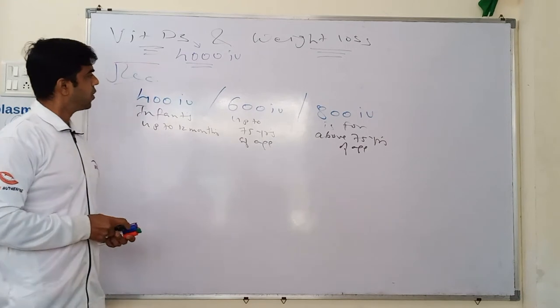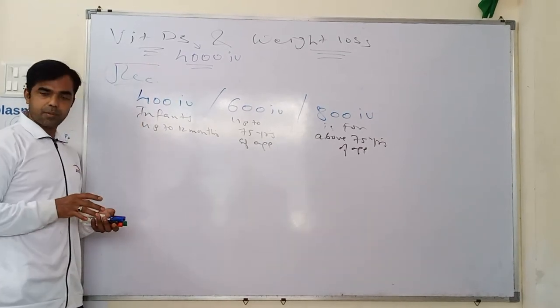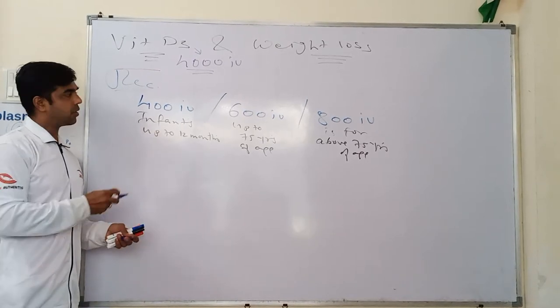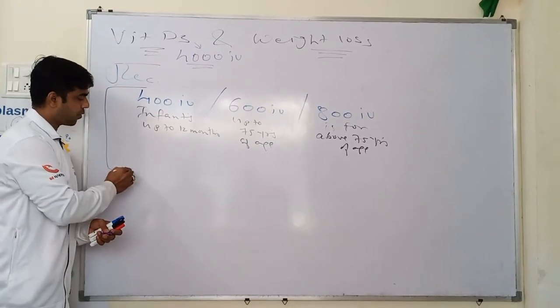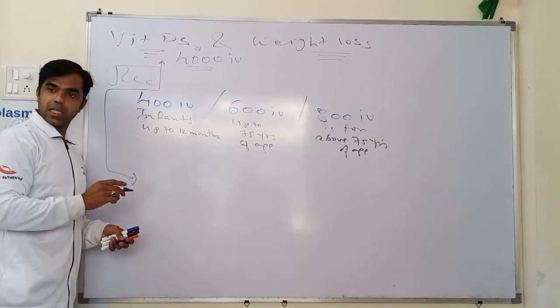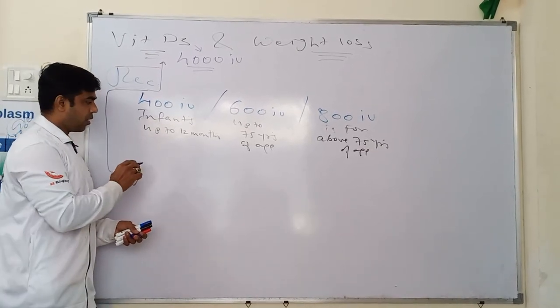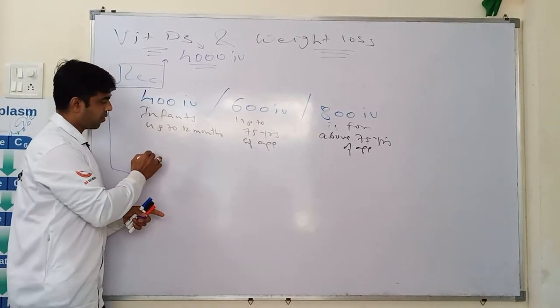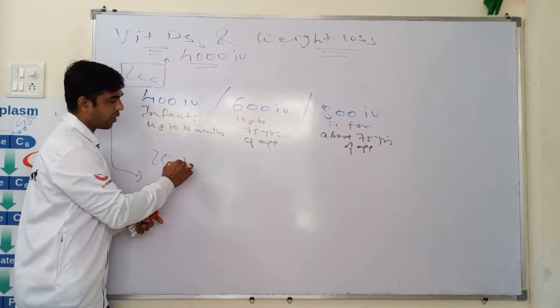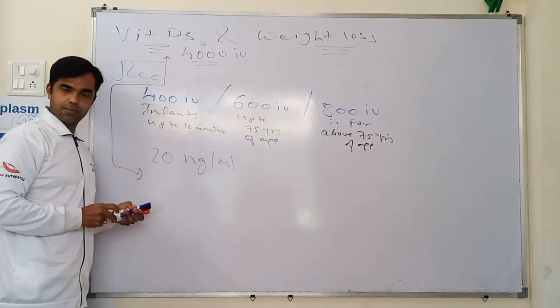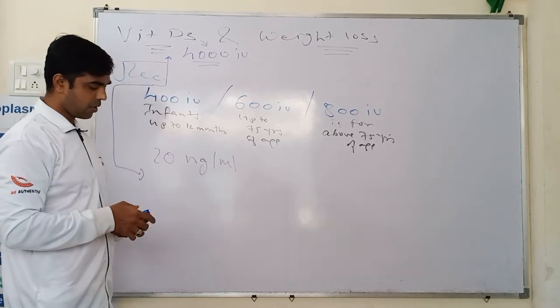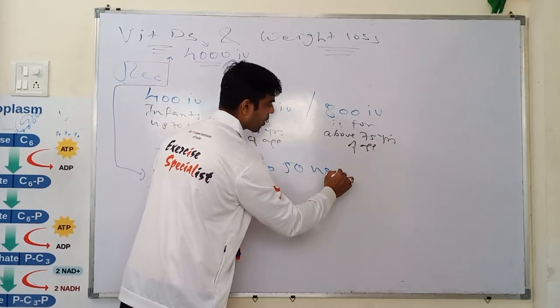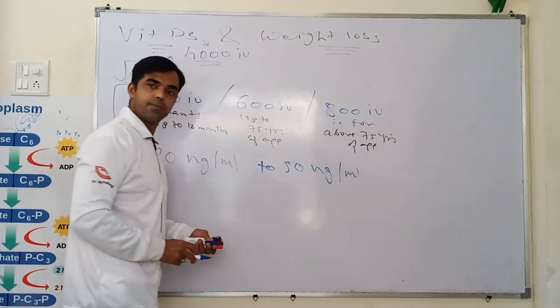So these are recommended doses but if you do the blood test or blood reports for vitamin D3, the report will state the normal range from 20 nanogram per ml to 50 nanogram per ml.